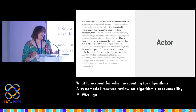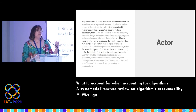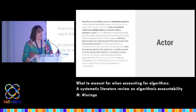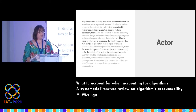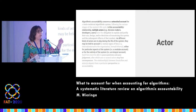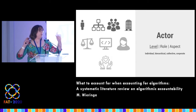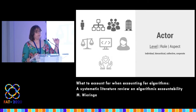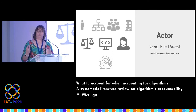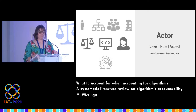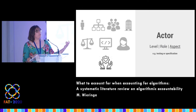There are five aspects to accountability: the actor, the forum, the relationship between the two, the account itself, and the consequences imposed. Looking at the actor, we can examine it in three ways: the level of the actor — is it an individual or a corporation being held to account? We can look at the role — are they developing the system, which poses different considerations, or are they just using the system? And finally, the aspect of the system for which they are held responsible.